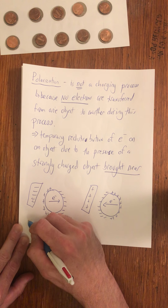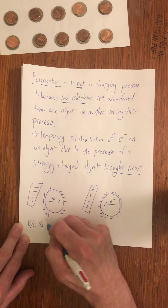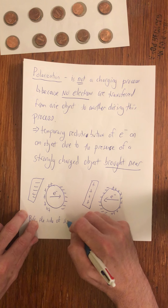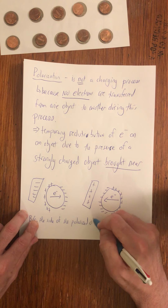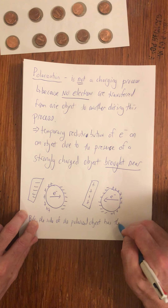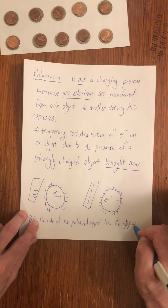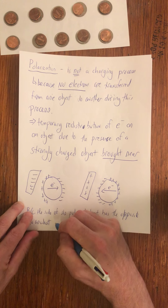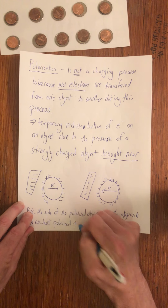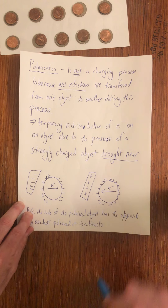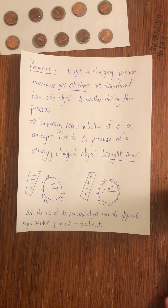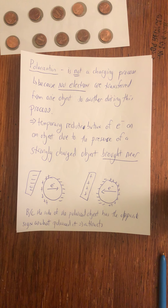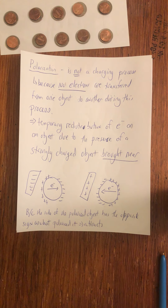That distribution is the reason why: because the side of the polarized object has the opposite sign as what polarized it, it attracts. And that's the reason why all neutral objects are attracted to all charged objects. I'll show you some demos of that in a separate video.